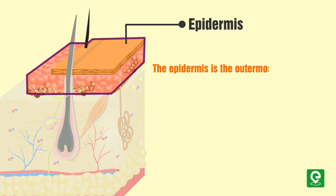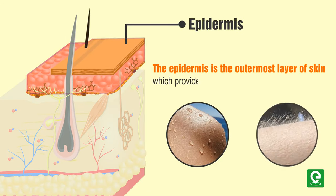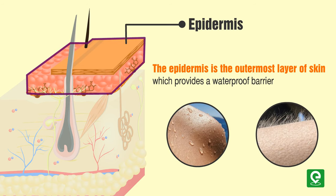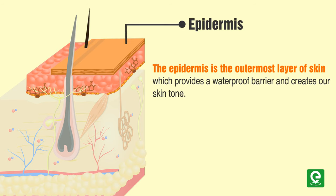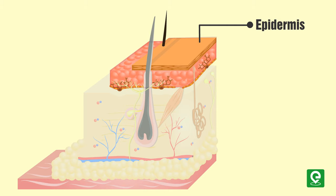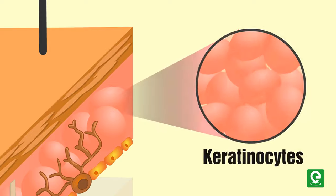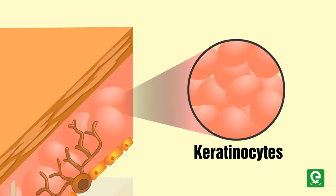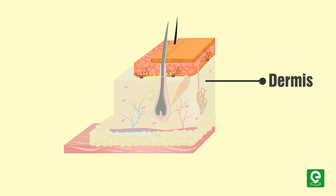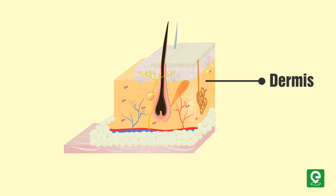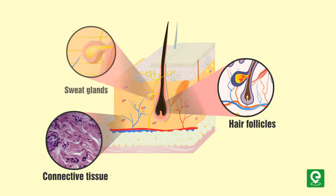The epidermis is the outermost layer of skin, which provides a waterproof barrier and creates our skin tone. The epidermis consists of a specific group of cells known as keratinocytes, which function to synthesize keratin — a long, thread-like protein with a protective role.